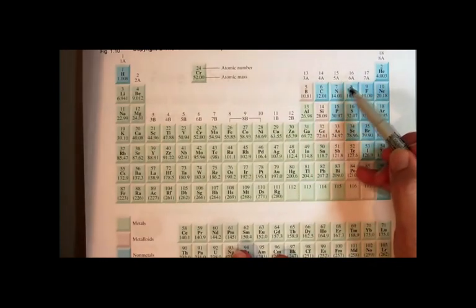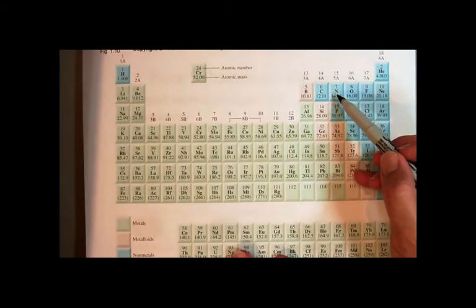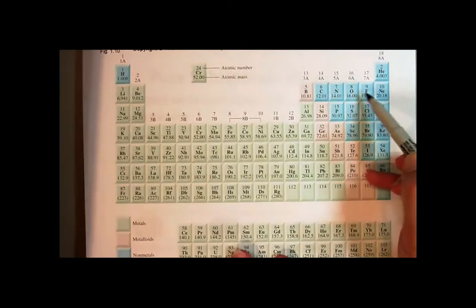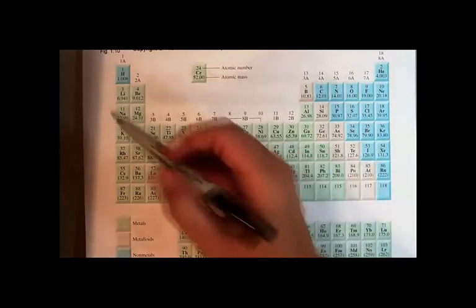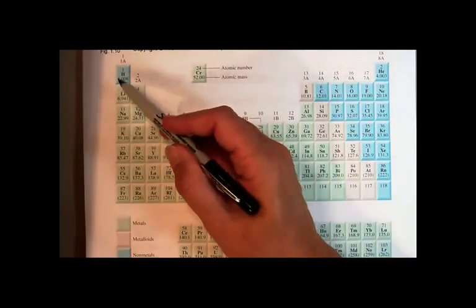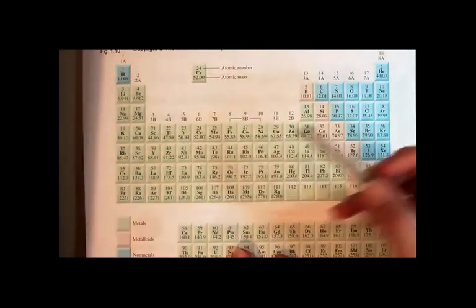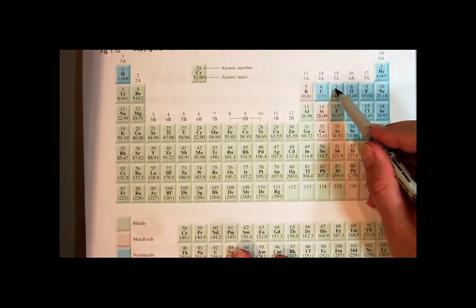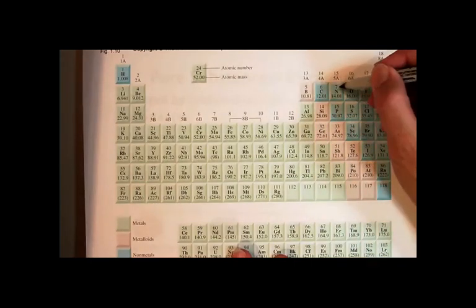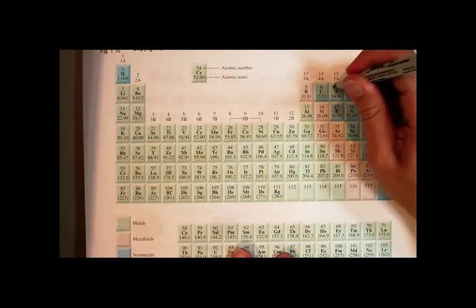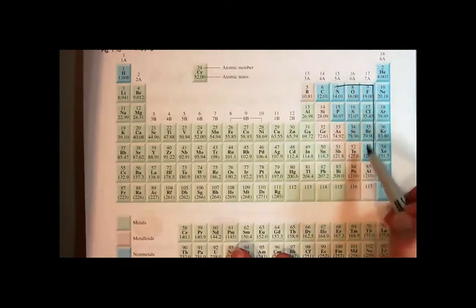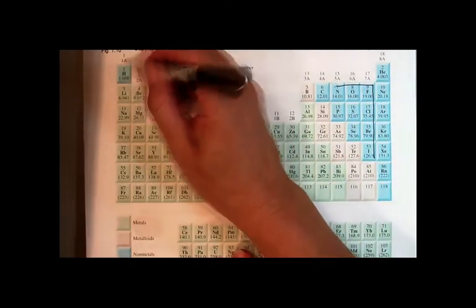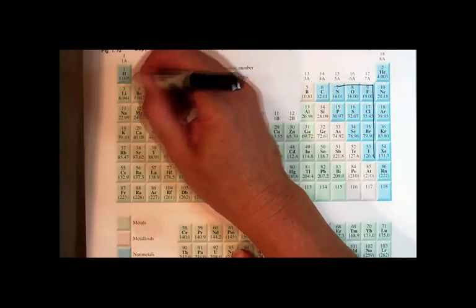The seven elements that exist in nature as diatomics are nitrogen, oxygen, fluorine, chlorine, bromine, iodine, and hydrogen. And the way I remember it is I know there's seven. I find atomic number seven on the periodic table, and I make the number seven, and that covers six of my seven. The other one is hydrogen. It's kind of weird. It's an outlier, but you just need to memorize the hydrogen also.